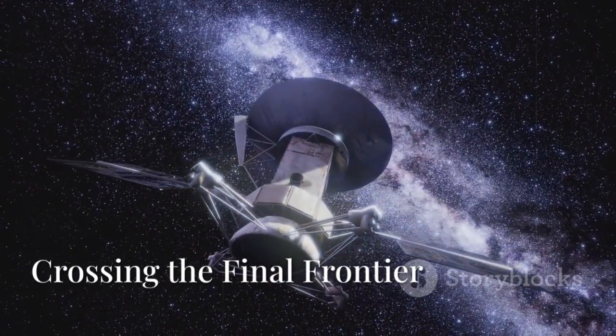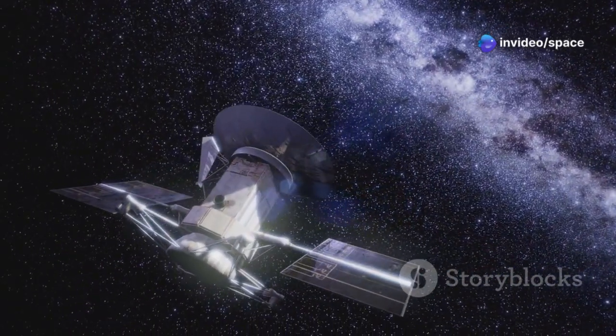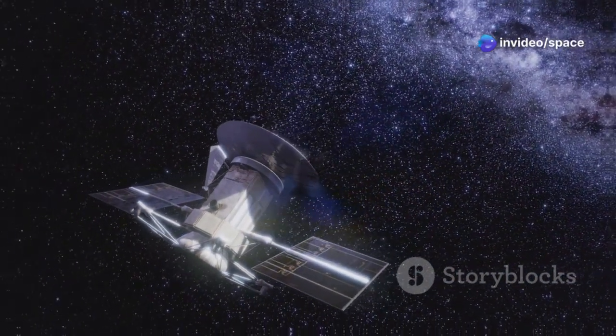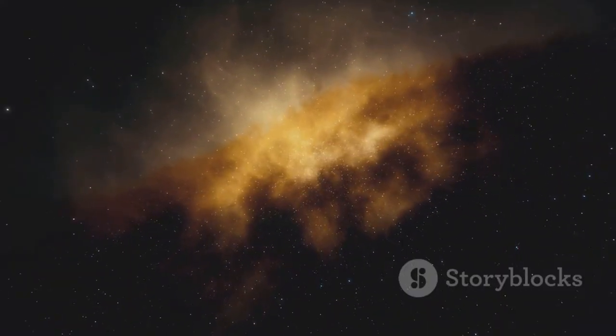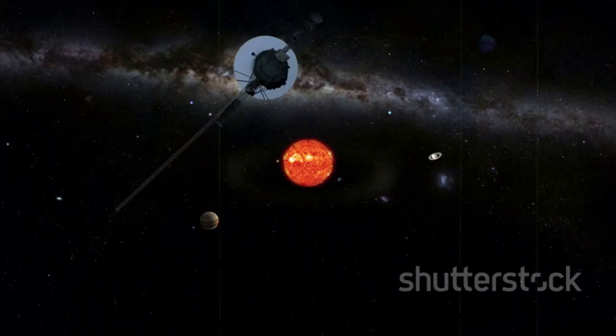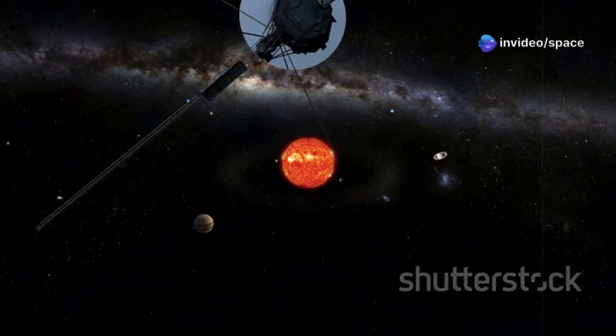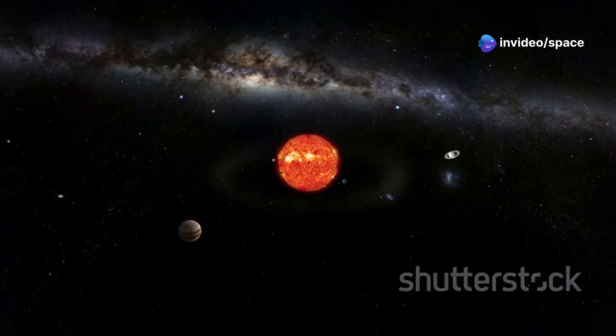After its planetary tour, Voyager 2 embarked on the Voyager interstellar mission, becoming one of humanity's first emissaries to the galaxy. For decades it sailed through the heliosheath, the turbulent frontier where the sun's influence wanes. On November 5, 2018 its instruments detected a sharp drop in solar wind and a rise in cosmic rays, proof it had crossed the heliopause into interstellar space.